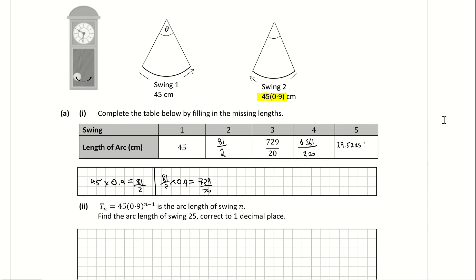Part 2: they've given us a formula for the pattern. Tn is equal to 45 times 0.9 to the power of n minus 1, which is the arc length of the nth swing. Find the arc length of swing 25, correct to one decimal place. Basically, you're finding term 25.